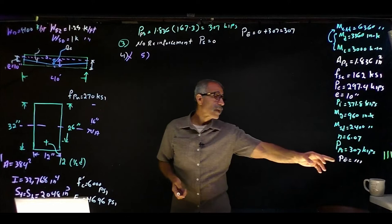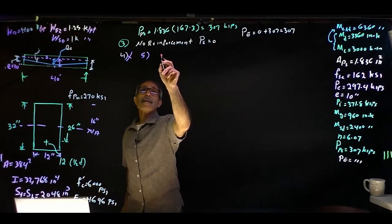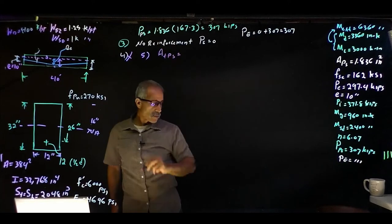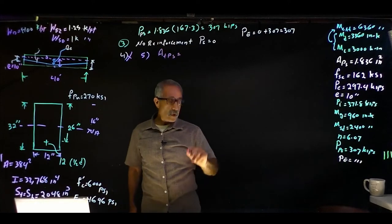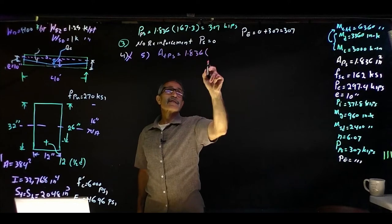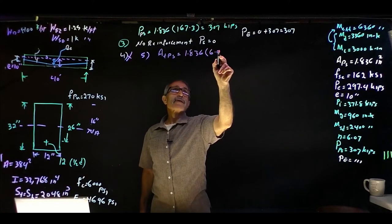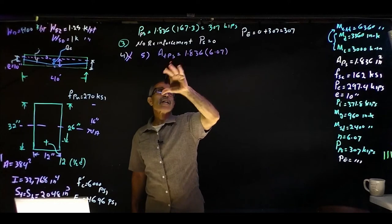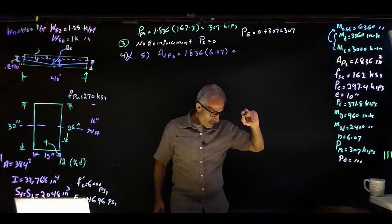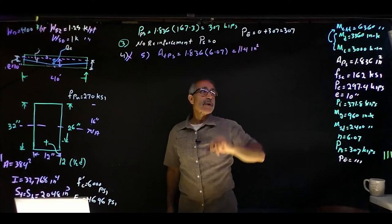Moving to step 5, we compute the combined transformed section properties. With n = 6.07, the transformed area of the prestressing steel is: Atps = Aps × n = 1.836 × 6.07 = 11.14 in².